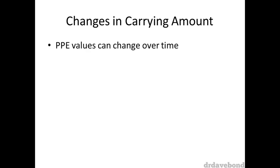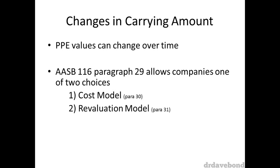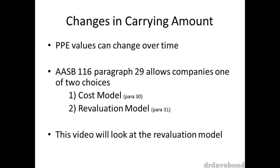As we know, property, plant and equipment values can change over time. AASB 116, specifically paragraph 29, allows companies one of two choices in accounting for property, plant and equipment after initial recognition. The first choice is the cost model, the second is the revaluation model. This video will look at the revaluation model.